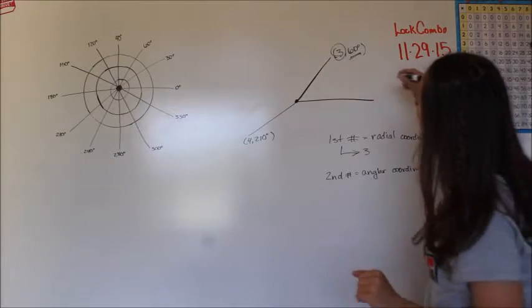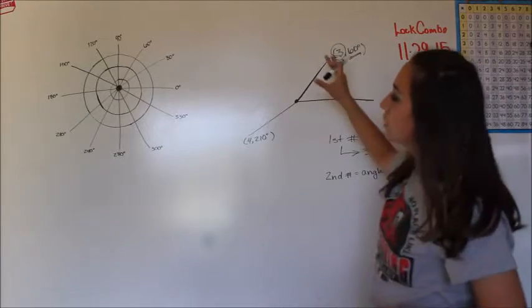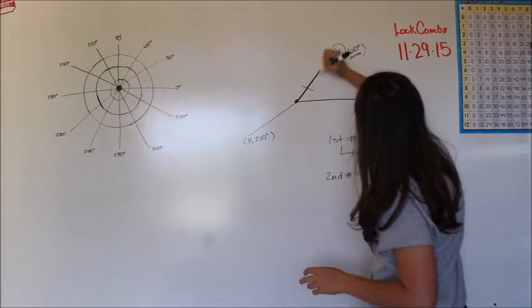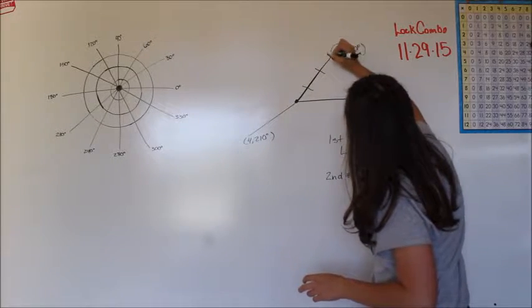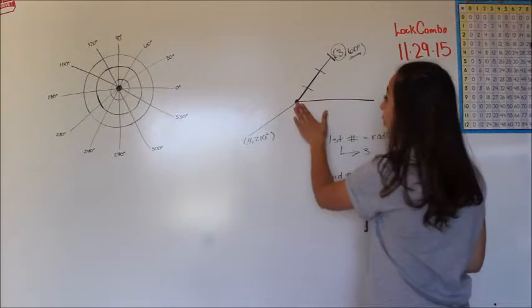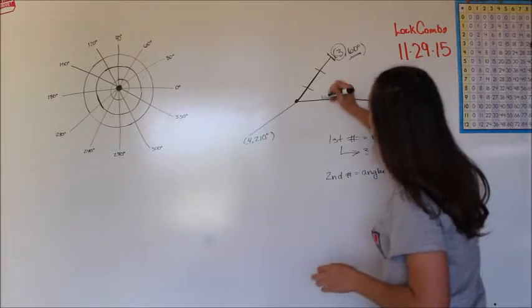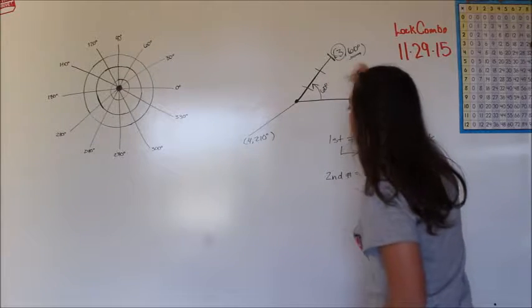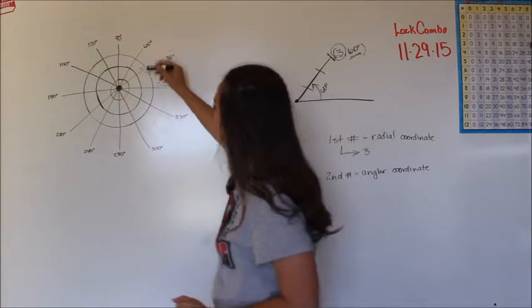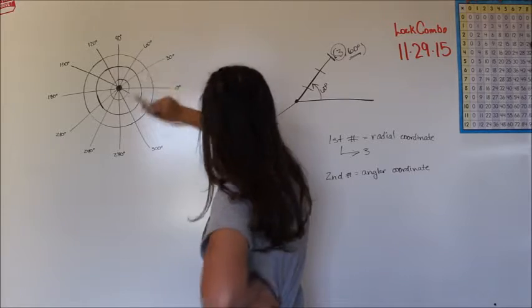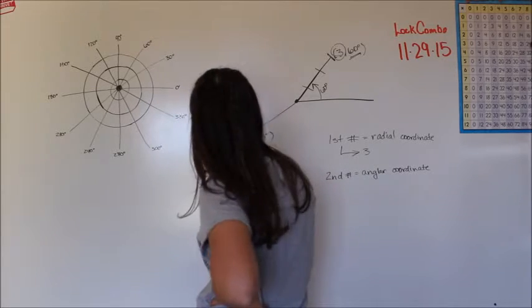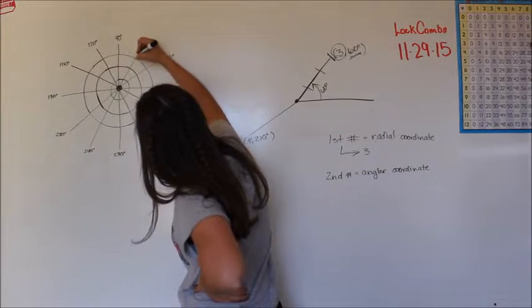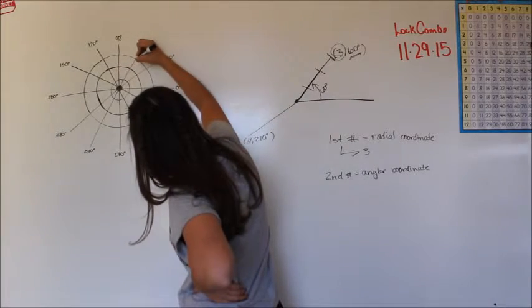And so if we were to think about this in terms of this, this first number means that it's 1, 2, 3 dashes out from the pole, and it's 60 degrees from right here. So this here is going to be 60 degrees. So if we look at this side with our fake unit circle thing going on here, it would be 3, so 1, 2, 3 at line 60 degrees.